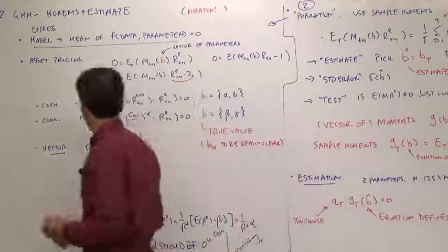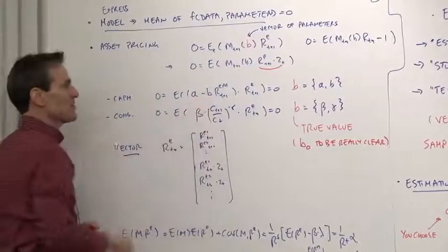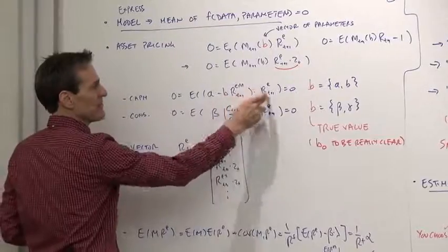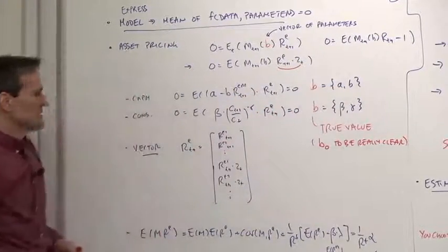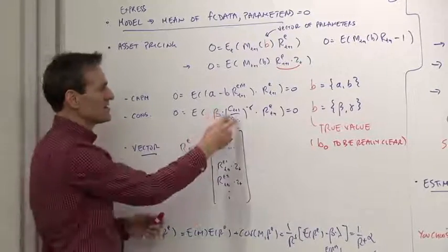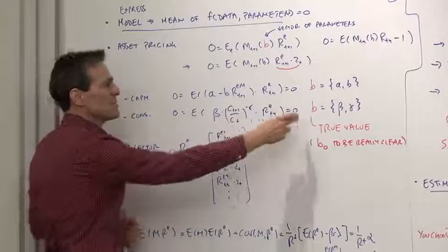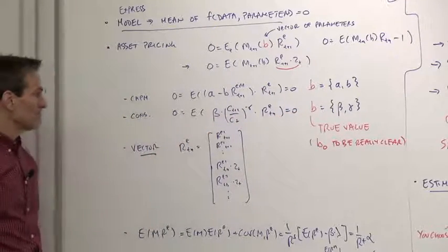Another case to keep in mind, the capital asset pricing model was A minus B times the market return. There, the unknown coefficients are A and B. The consumption-based asset pricing model, the consumption-based discount factor times the return was equal to zero. Here, B means beta and gamma, the unknown parameters.